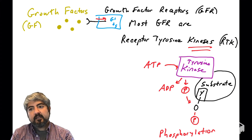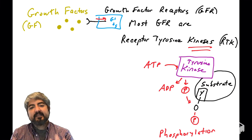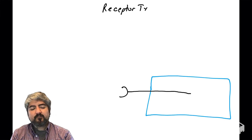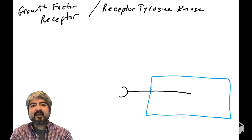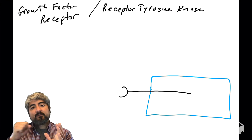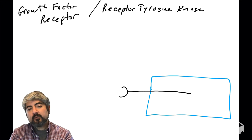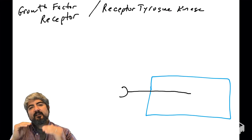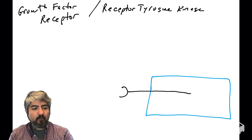Receptor tyrosine kinases are proteins that are receptors — they bind ligands like growth factors — and they can also act as an enzyme, a kinase. So a growth factor receptor is also called a receptor tyrosine kinase; it is the same protein. It binds a growth factor and acts as a tyrosine kinase. Don't let the two different terms for this type of protein confuse you.